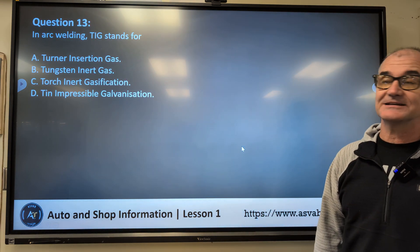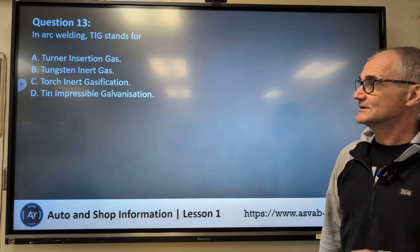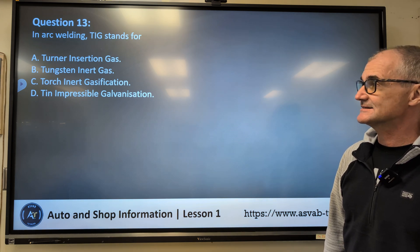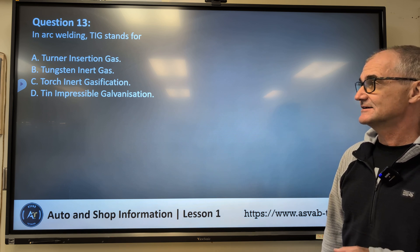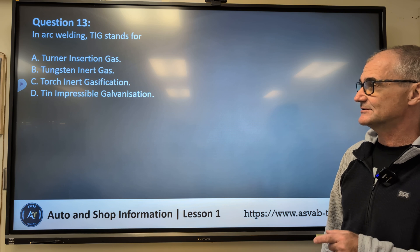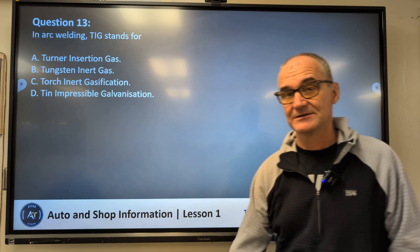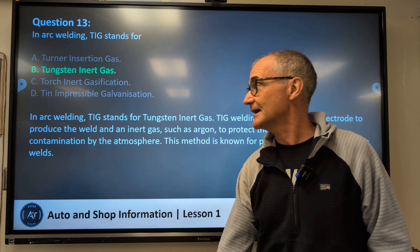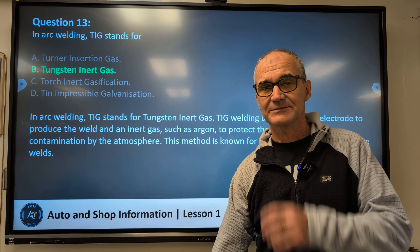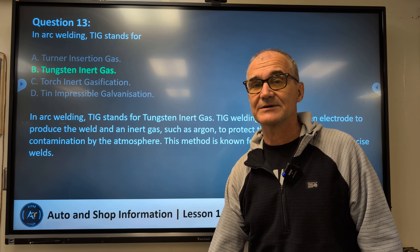Question thirteen: In arc welding, TIG stands for — A, turner insertion gas; B, tungsten inert gas; C, torch inert gas; D, tin impressible gas? It's really a vocabulary question. Correct answer is B — tungsten inert gas. You could eliminate some of those answers for not making sense.